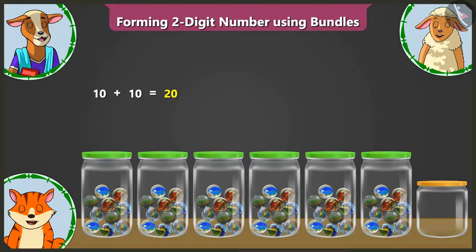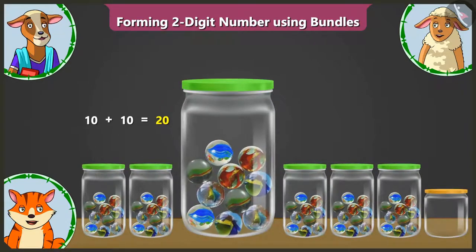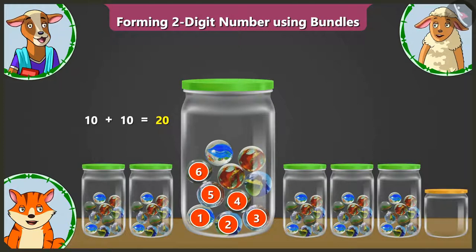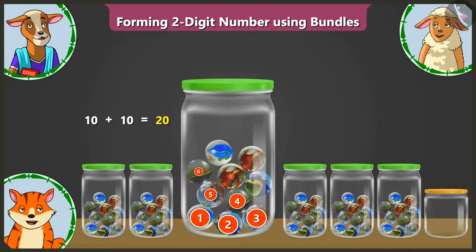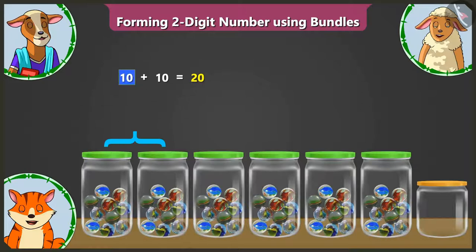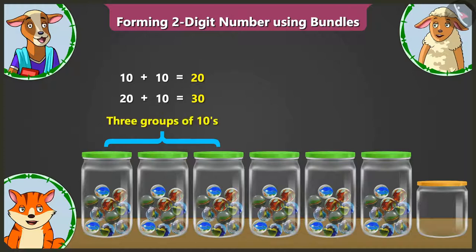Now look, here in the third jar there are 1, 2, 3, 4, 5, 6, 7, 8, 9 and 10 marbles. So this makes it 10 and 10, 20, and 20 and 10, 30 — 3 groups of 10s.